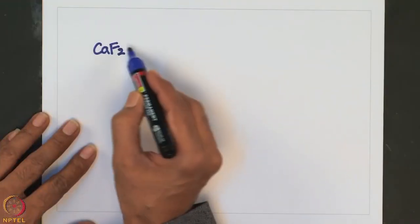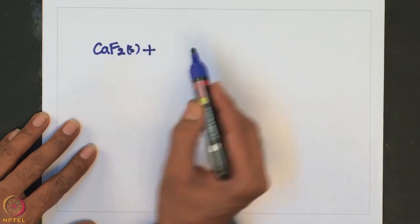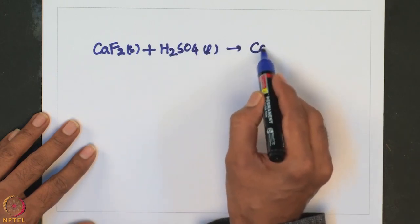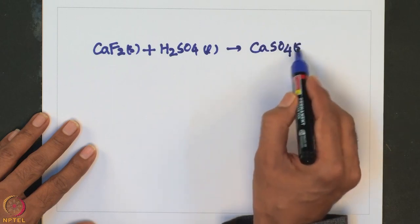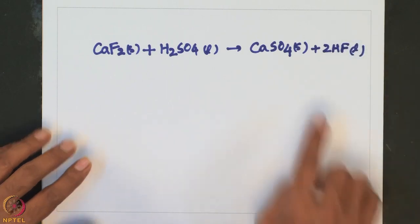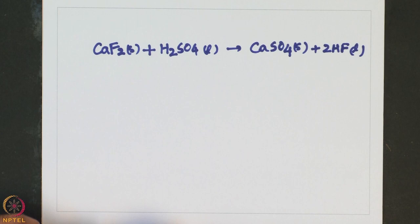The most important fluoride of group 2 is calcium fluoride, also called fluorite. Its mineral form, fluorspar, is the only large-scale source of fluorine. Hydrogen fluoride is prepared by the treatment of sulphuric acid on calcium fluoride or fluorspar: CaF2 plus concentrated H2SO4 gives CaSO4 plus HF. This is how hydrogen fluoride is generated starting from calcium fluoride.